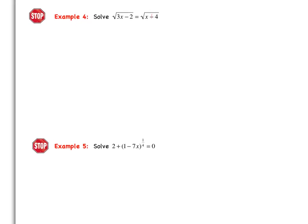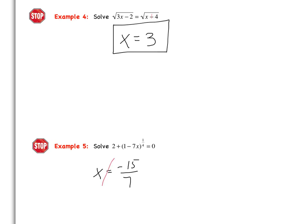Hopefully you had a chance to try those two examples. In example 4, you should have gotten x equals 3, and after checking your work it checks out. In example 5, the index was 4, so you raise both sides to the 4th power after isolating. You should have gotten x equals negative 15/7, but when you check your answer it doesn't work. So the final answer is no solution.